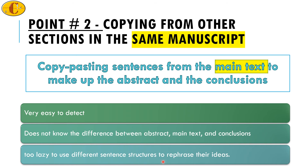It is necessary to understand what belongs in each section and to modify sentences accordingly. If you must mention something in both the abstract and conclusions, at least use different sentence structures. Repeating the same sentences reflects very badly on the author, and reviewers will think the author is too lazy. While copying from a previous work may not be immediately noticed without a plagiarism check, copying within the same manuscript will be detected immediately and may lead to rejection.